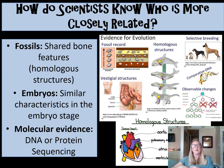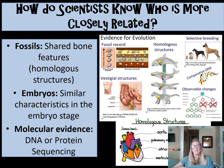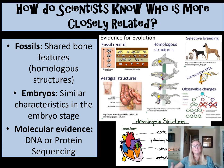Another piece of information that scientists use is embryos. The idea of embryology is that scientists look at embryos of different organisms and from that can determine who is more closely related to whom, simply based on the structures that they possess.